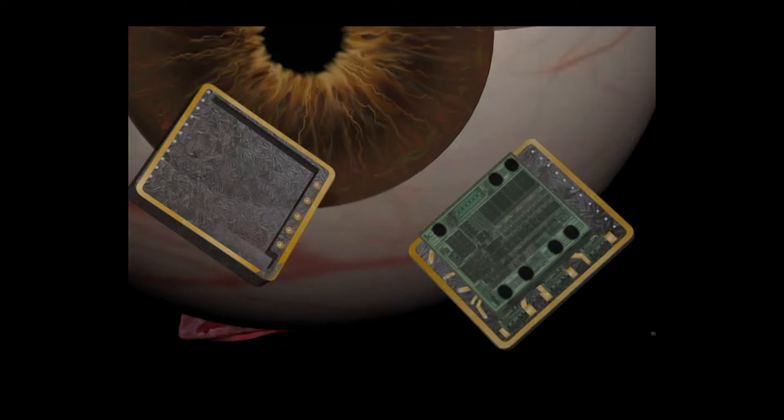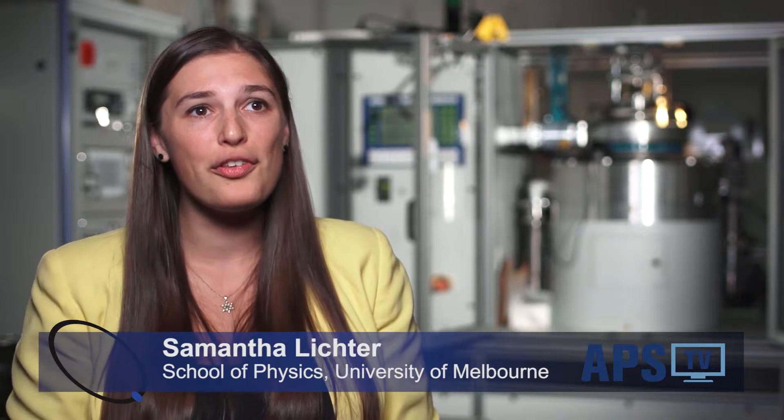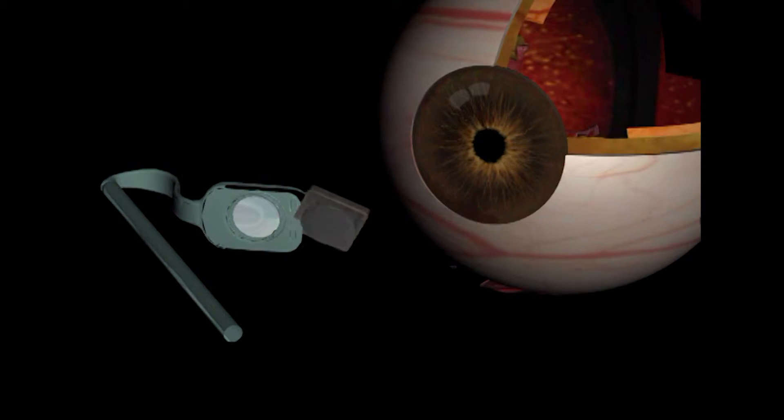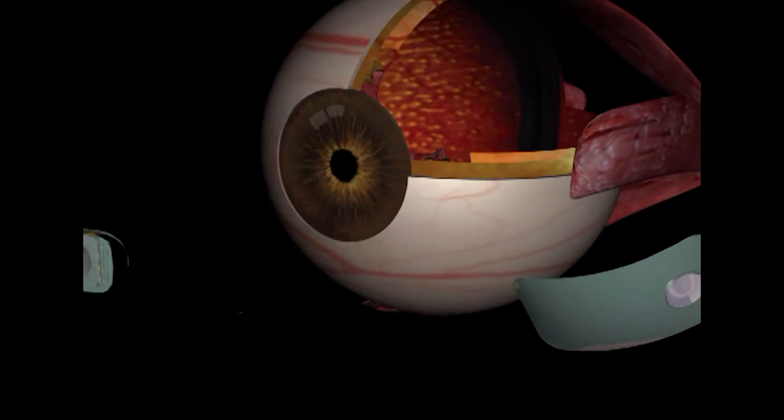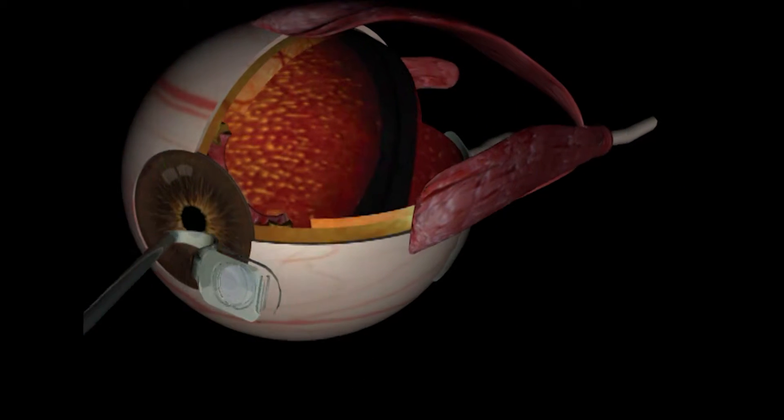Bionic Vision Australia is a collaboration between eight institutions including universities, medical institutes and hospitals who are working together to develop a bionic eye for the world after the success of the cochlear implant which originated here in Australia at the University of Melbourne.